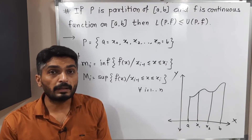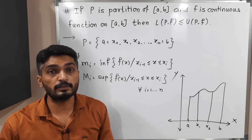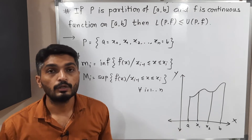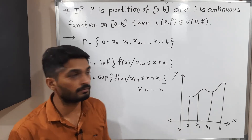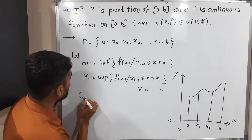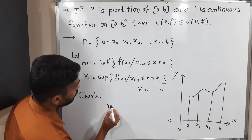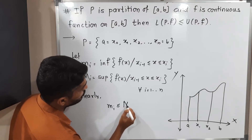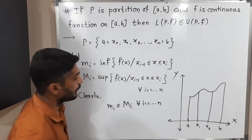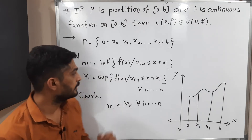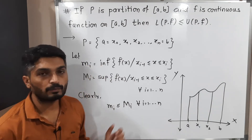Clearly, small mi is the infimum, that is the smallest value, and capital Mi is the supremum, that is the largest value. So the smallest value is always less than or equal to the largest value. That is why we can write: mi ≤ Mi, and this is true for all i running from 1 to n. By this definition of mi and Mi, we can write this inequality.